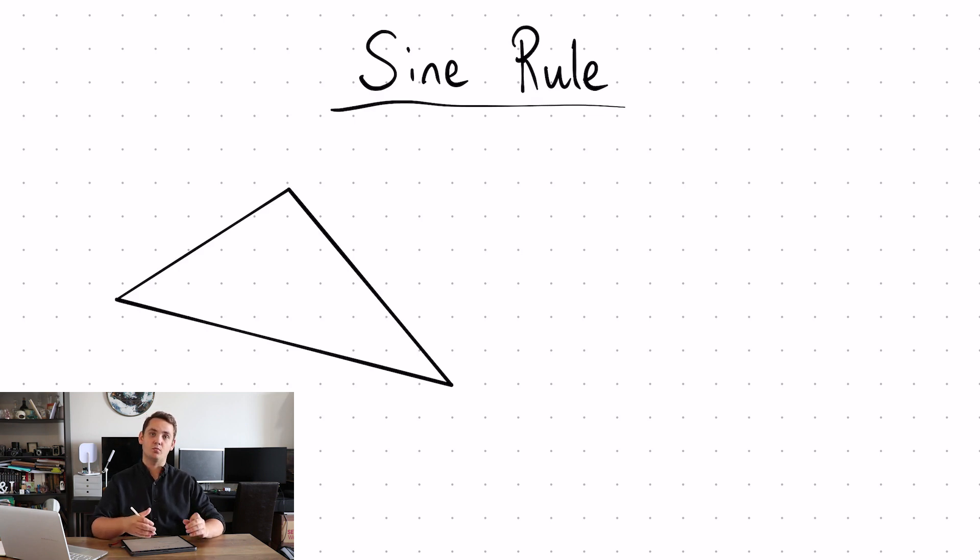The sine rule and the cosine rule both relate to any shape triangle, not just right angle triangles but any shape triangle.